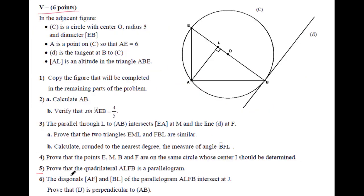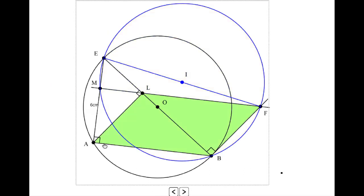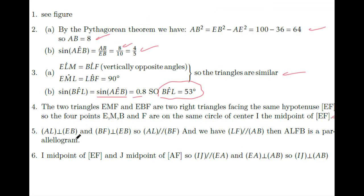Part 5: Prove that the quadrilateral ALFB is a parallelogram. BF is perpendicular to EB, and AL is perpendicular to EB, so BF is parallel to AL. We have AL perpendicular to EB and BF perpendicular to EB, so AL parallel to BF, and we have LF parallel to AB. Then ALFB is a parallelogram.